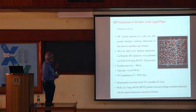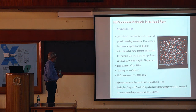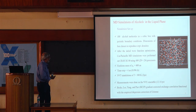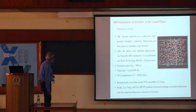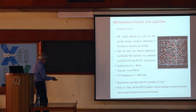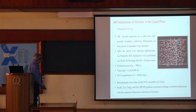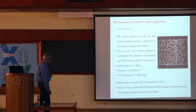This is a fairly large simulation. We start with about 100 alcohol molecules in a cubic box with periodic boundary conditions. The dimensions of the box are chosen to reproduce the experimental density of the liquid. We perform initial wave function optimization, run CPMD simulations on the Cray machine, and the measurements were done on the NVE ensemble using the BLYP gradient-corrected density functional with empirical dispersion correction.